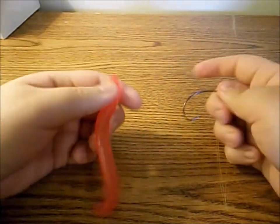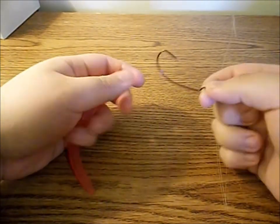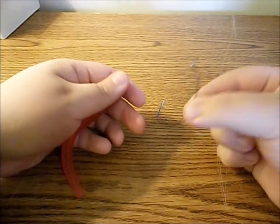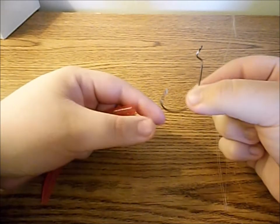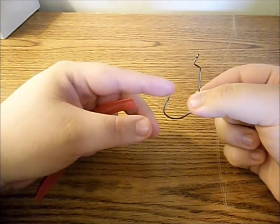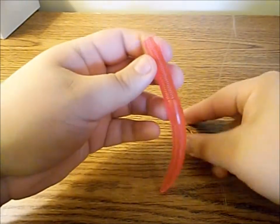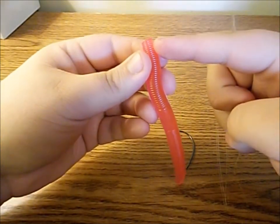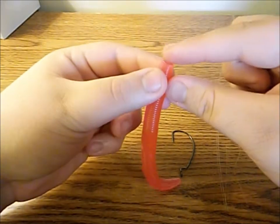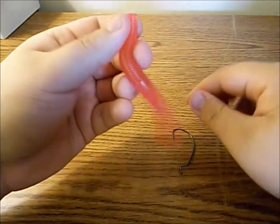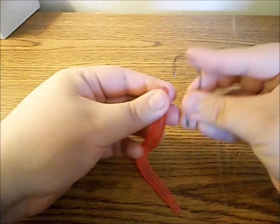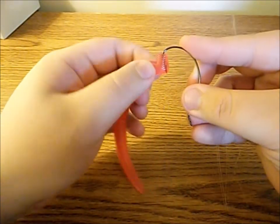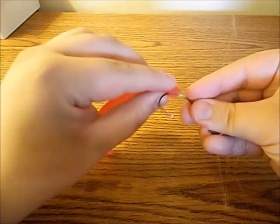All right, so the first way to rig a Yamamoto Senko is you're going to take a 3-0 Gamakatsu, or just a regular 3-0 EWG hook, EWG obviously standing for extra wide gap. I prefer Gamakatsus because these guys are just ridiculously sticky sharp. So, the first way to rig these guys is to take the nose of the Senko. Put it right in the hook, just right up to where that point turns. Push that through the plastic, spin it around.